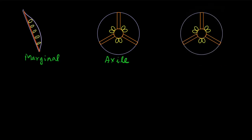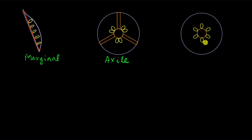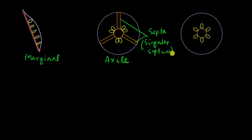Another type of placentation is similar to axile, but you take away the spokes — called septa, singular septum — and you get something like this. Here the ovules are still attached to the axis, but there are no septa. The ovules are free from the septa; only the axis is there. The ovules are attached to the axis but are free to be anywhere as long as they are attached to it. Hence this is called free central placentation.